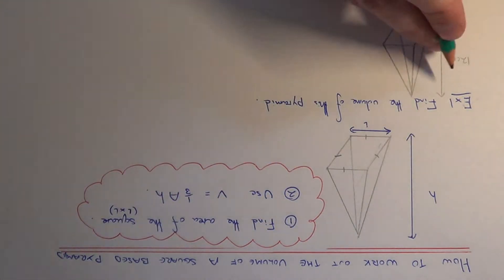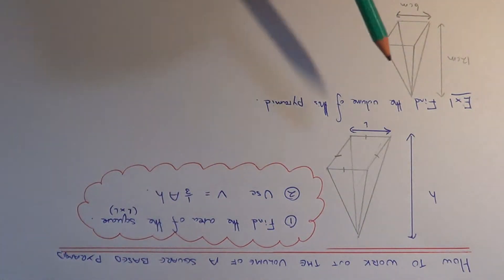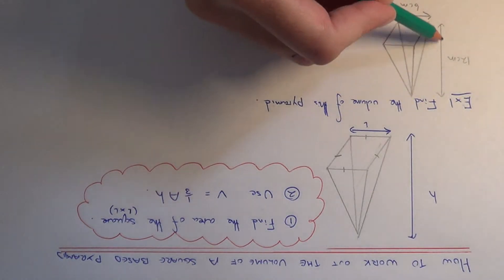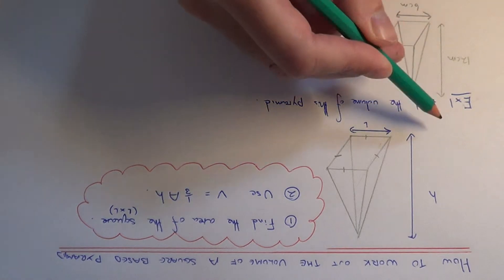Let's have a look at the example here. We're going to find the volume of this square base pyramid. The base of the square has side length 6 cm and the vertical height is 12 cm.